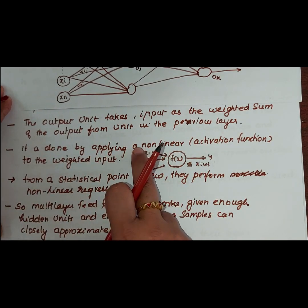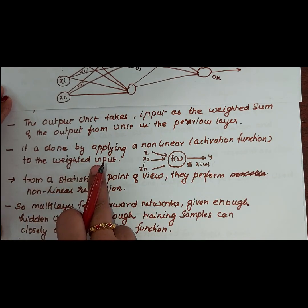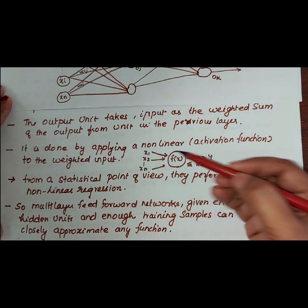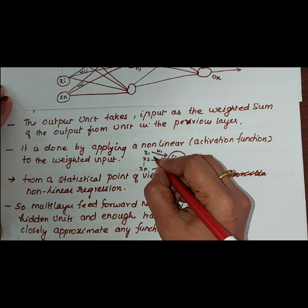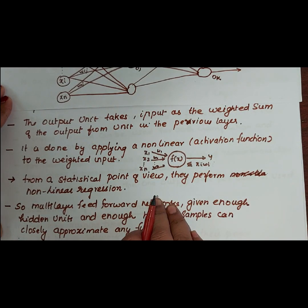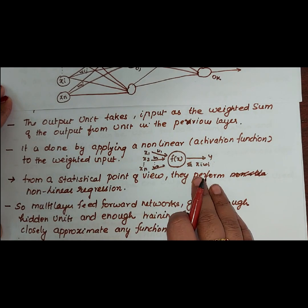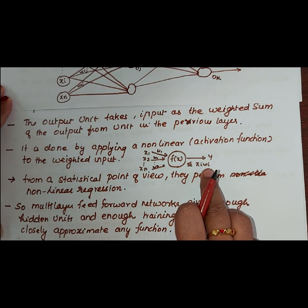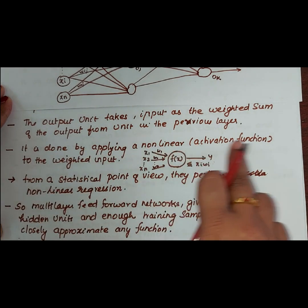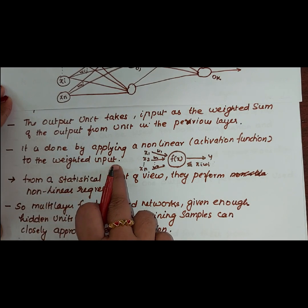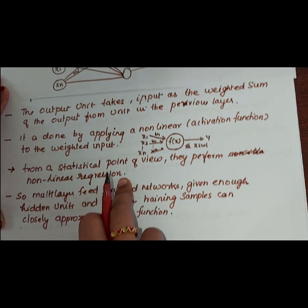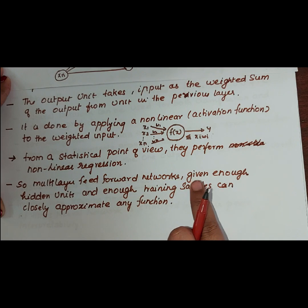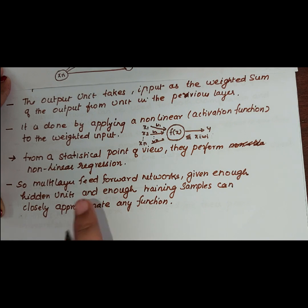This is done by applying a non-linear activation function to the weighted input. You have x1, x2, ... xn with associated weights w1, w2, ... wn, and they are summed together as sigma(xi * wi). From a statistical point of view, neural networks can also perform non-linear regression. A multi-layer feed-forward network, given enough hidden units and enough training samples, can closely approximate any function.